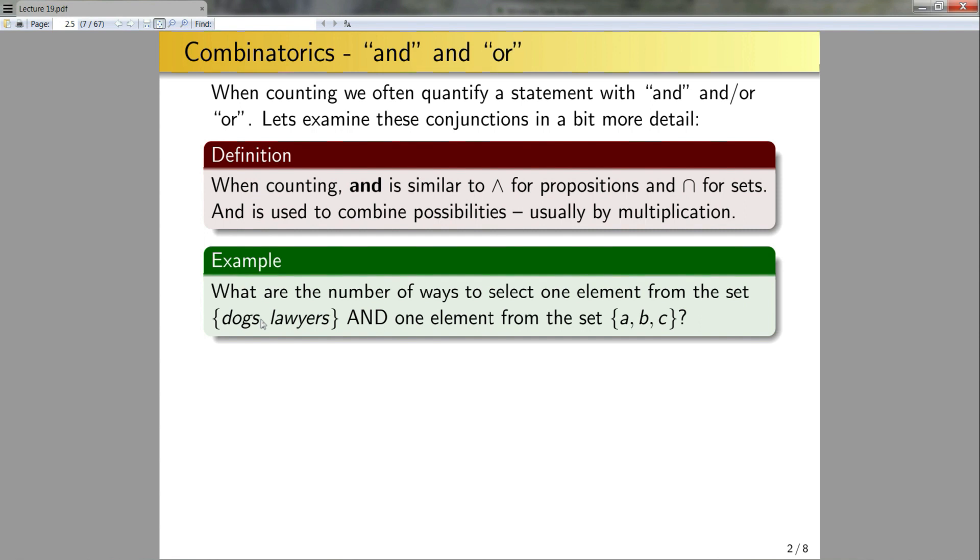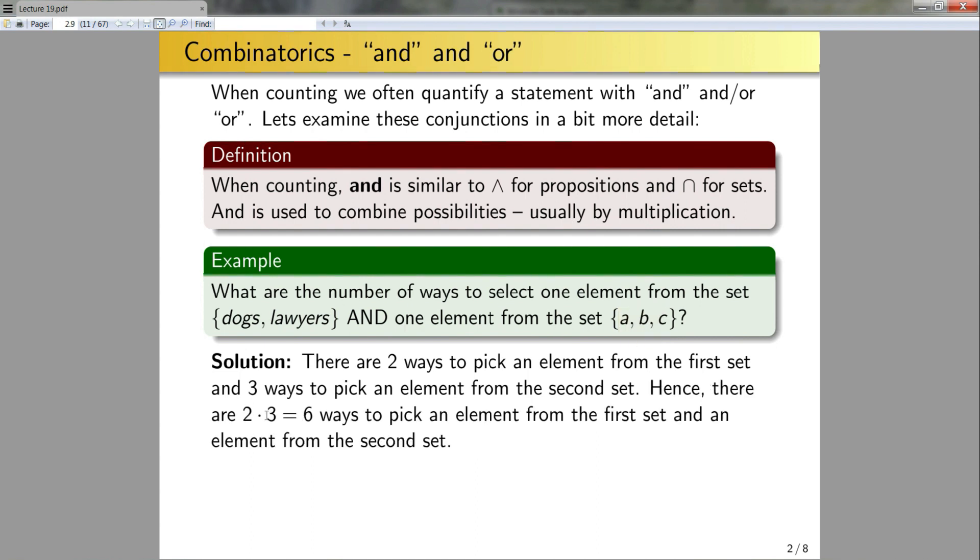Let's look at an example. What are the number of ways to select one element from the set dogs, lawyers and one element from the set a, b, c? In this case, there's two ways to pick an element from the first set and three ways to pick elements from the second. So combining these together, there's 2 times 3, which equals 6 ways to pick an element from the first set and an element from the second set.